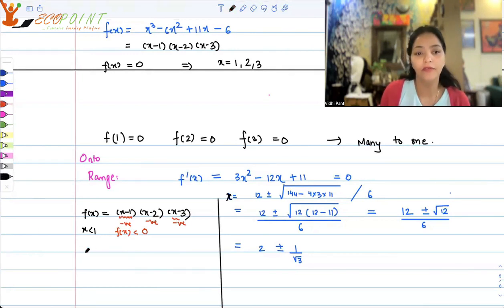Now if you take x greater than 3, your first expression will be positive. The second expression will be positive. And the third expression will also be positive. That means f(x) throughout will be greater than 0.